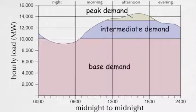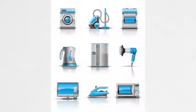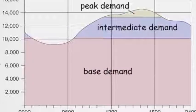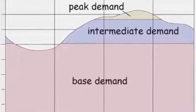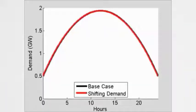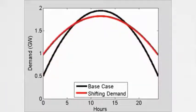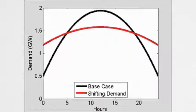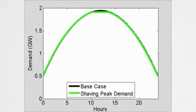Electric utilities have to produce enough energy to meet consumer demand. Demand changes over the course of the day as people turn on their appliances — their air conditioners and other activities that use electricity. The peak of demand is the time of day when people use the most electricity. DSM can be used to shift load away from periods of peak demand or shave peak loads using demand response techniques.